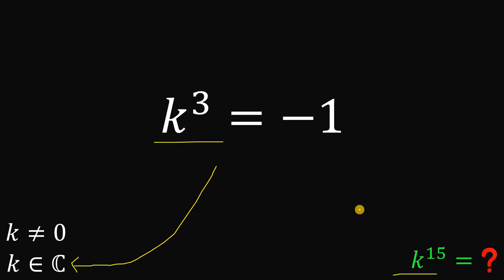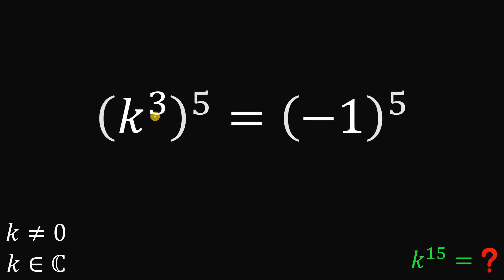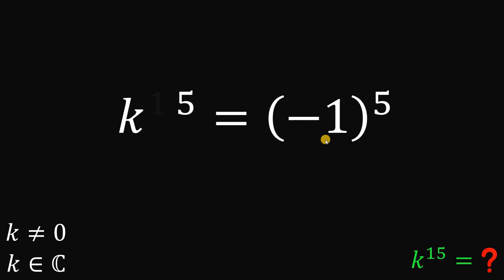And here, since we want the value of k raised to the power 15, so what we're going to do is raise both sides by 5. Because 3 multiplied by 5, this is just 15. And the negative 1 raised to the power 5, this is just still negative 1. And that is the numerical value of k raised to the power of 15.